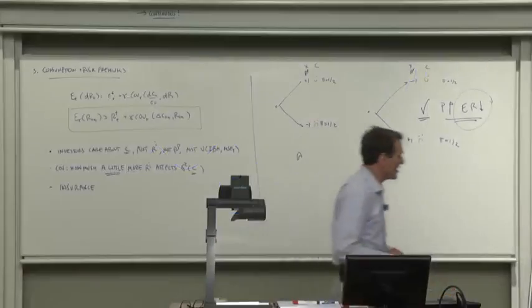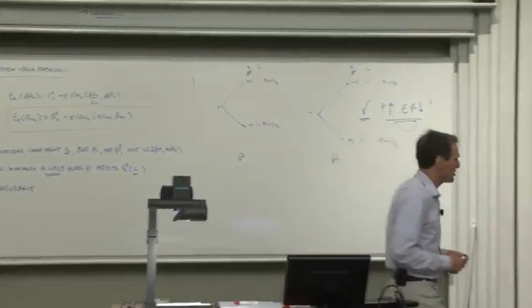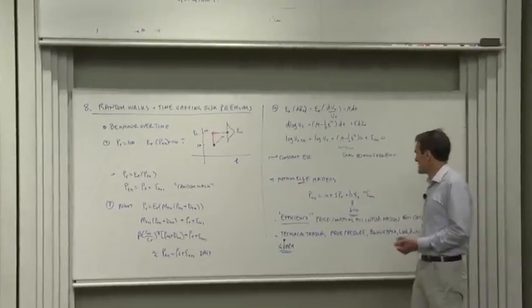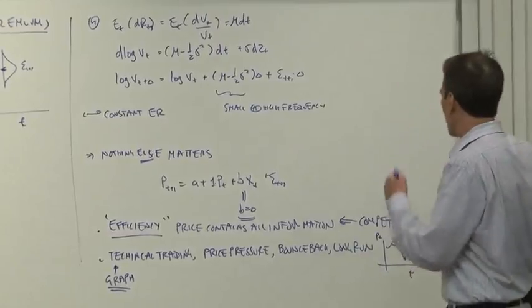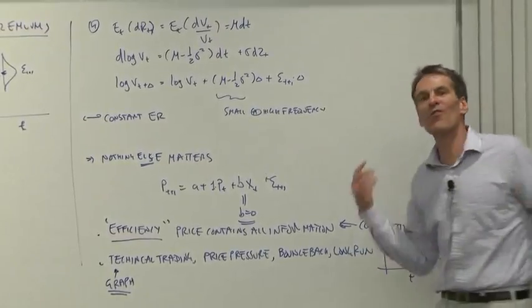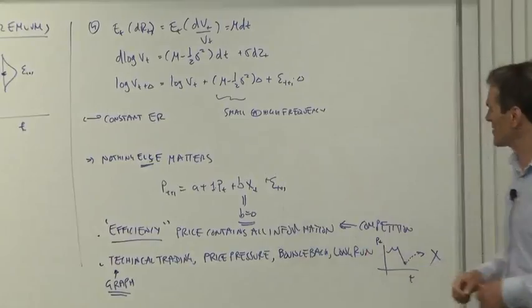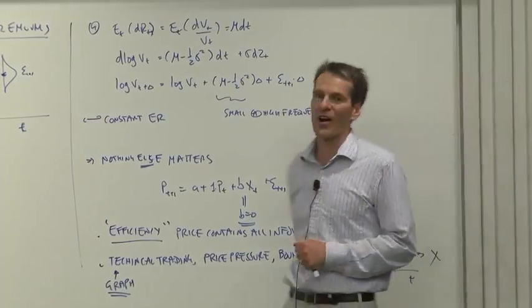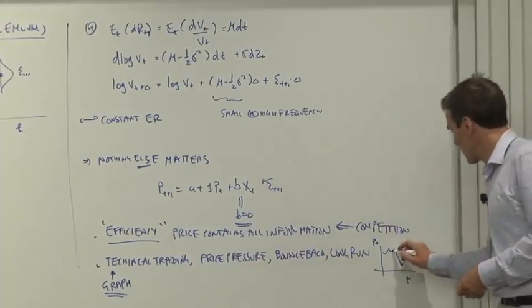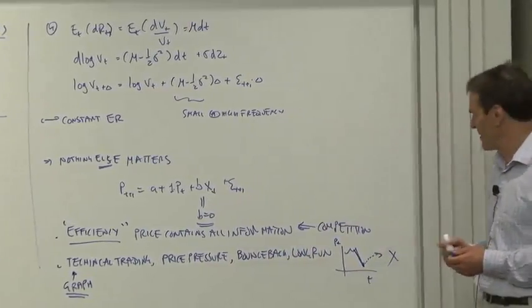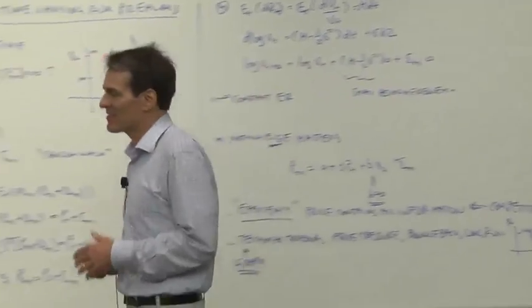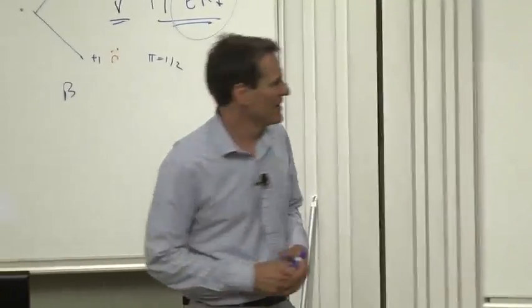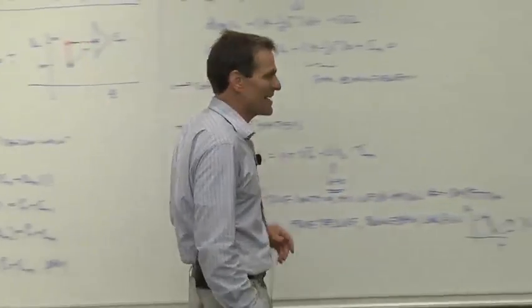That is a lot of fun — showing how all those things don't work, or work a lot less well than people think. More implications: the concept of price pressure — that if prices are driven down by a wave of selling they'll bounce back in the future, or that long-run investors can afford to wait out short-term price fluctuations — those are all wrong in a random walk. Those all reflect the view that if the price went down today, there's some sort of bounce back. Nope. In a random walk, once it went down, it's down forever. And statistically, that's a very close approximation to what stock returns are.